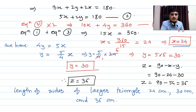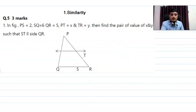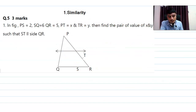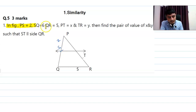Now look at question number 5. First sub-question: In the figure, PS = 2, SQ = 6, QR = 5, PT = x, TR = y. Find pairs of values of x and y such that ST is parallel to QR.